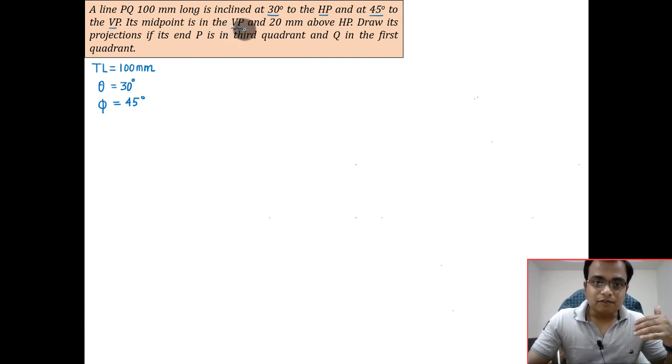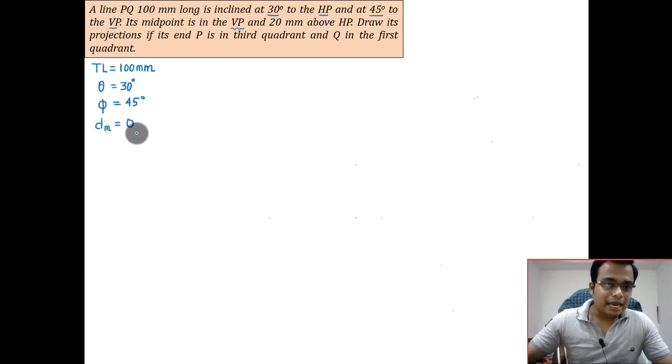So the midpoint is in the VP. If there is a point in the VP, then its distance from the VP will be zero. The distance of any point from the VP is represented by d, and the distance of midpoint from VP will be equal to zero. And it is 20mm above the HP, so h_m is equal to 20.